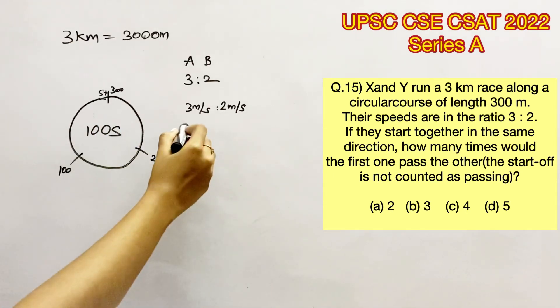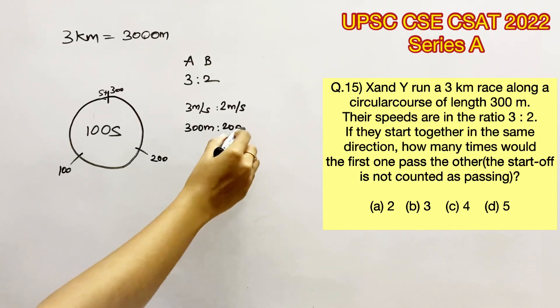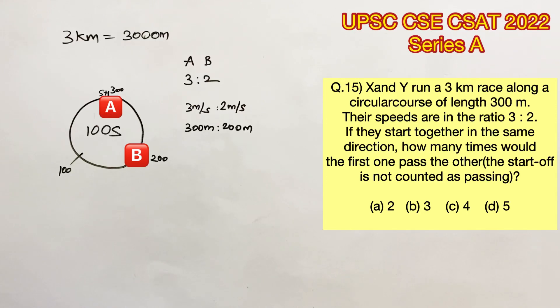So for the first 100 seconds, A would have completed the whole circle, that is 300 meters. Whereas B would have only gone for 200 meters. So they'll be in this position.